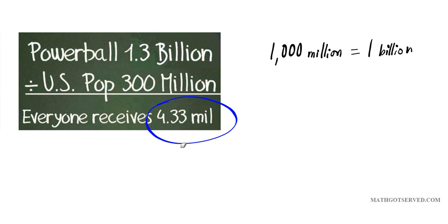Okay, so in this problem we are looking for the quotient of 1.3 billion, and that's the amount of money for the Powerball jackpot, and the population of the United States, which is 300 million.